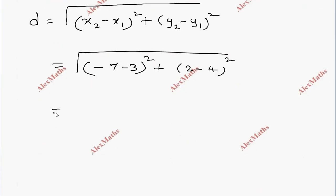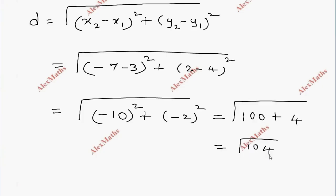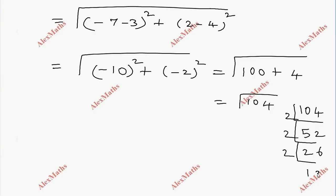So this is the simplification: square root of (-10) whole square plus (-2) whole square. This gives root of 100 plus 4, which is root of 104. Factoring 104 gives 2 times 2 times 26, so the answer is 2 root 26.